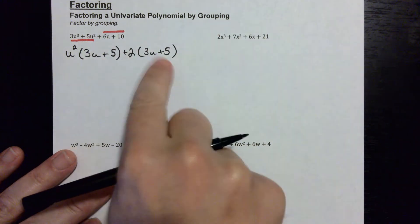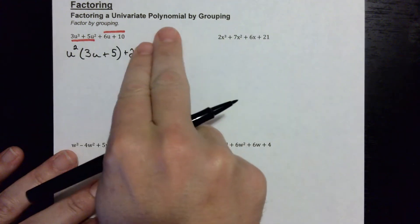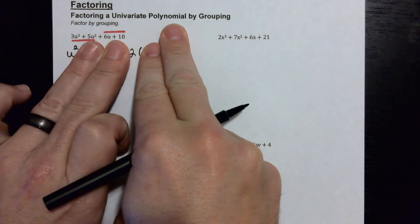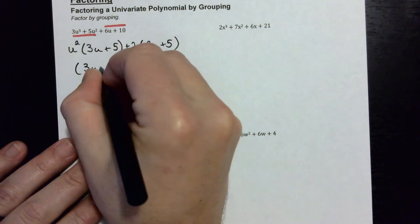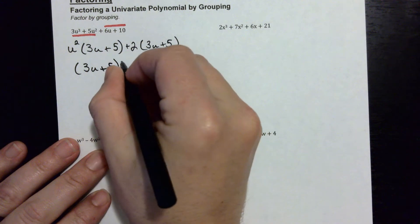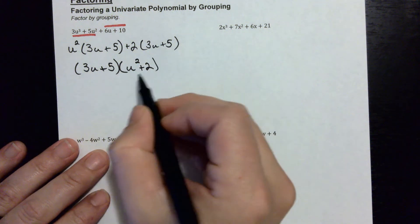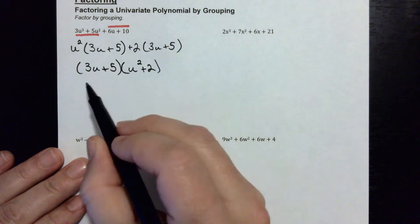Now that's good because if these parentheses are the same, that means we can factor those out, and when we take those two out, all that's going to be left is the u squared and plus two. So let's factor out a three u plus five, and that will leave u squared plus two. Now this cannot be factored anymore because that's a sum of squares, so this is where the problem ends.